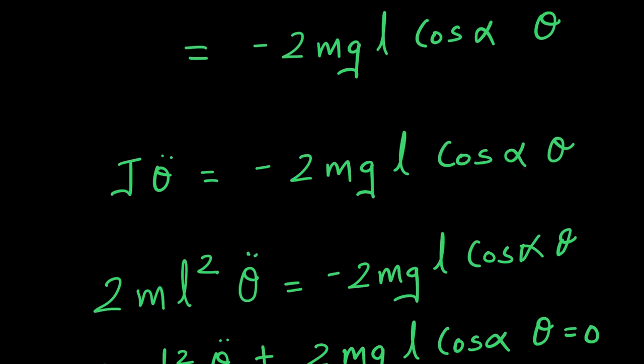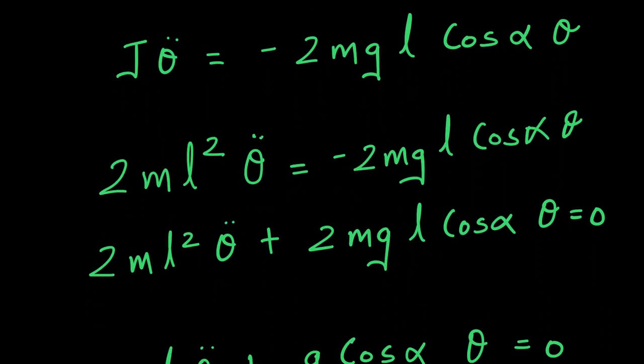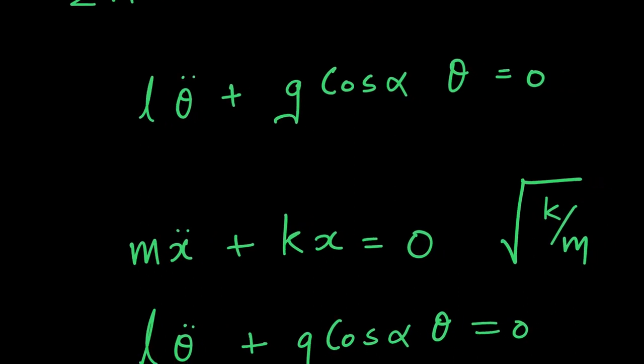For the time being this is the final equation that I am left with. Here it is. Now you can further simplify this equation by plugging in for j. j is 2 ml square. Now once you do that simplification then you will end up with this particular formula as shown over here: l theta double dot plus g cos alpha theta equal to 0.